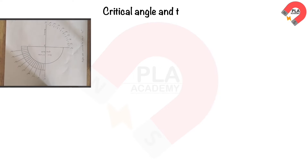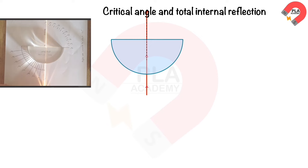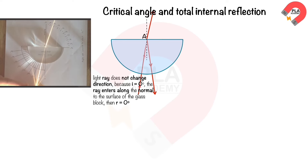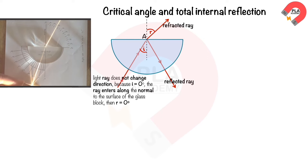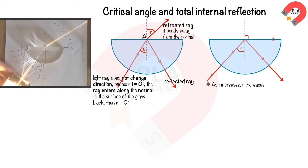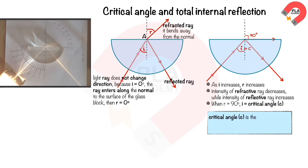The critical angle and total internal reflection. As a ray shines on a semicircle glass block, it slows down but does not change direction when the angle of incidence is 0°. At point A, some ray reflects and some refracts. When a ray travels from a denser medium (glass) to a less dense medium (air), it bends away from the normal. As the angle of incidence increases, the angle of refraction increases. When R = 90°, the angle of incidence equals the critical angle, C. The critical angle is the angle of incidence in the denser medium at which the angle of refraction is 90°.